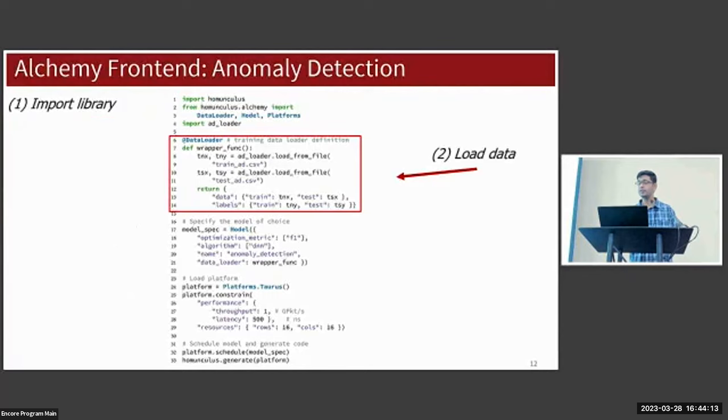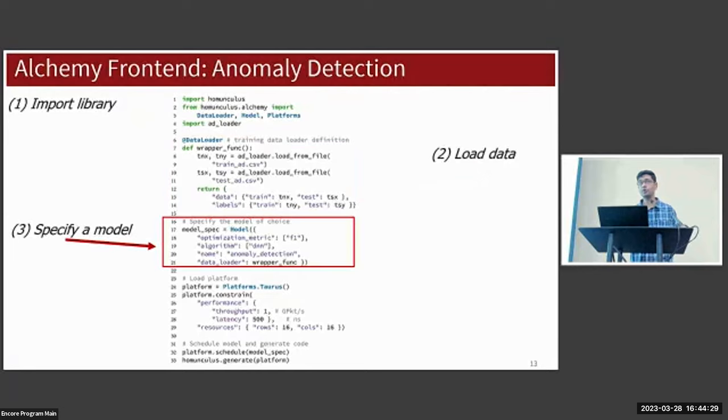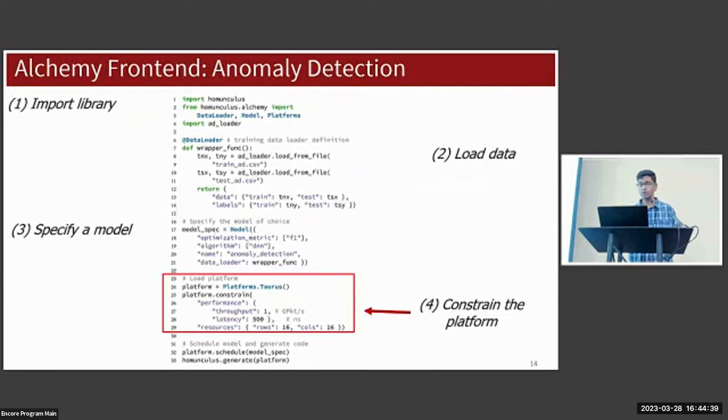First we'll import the relevant Homunculus Python libraries. Next we'll load the training and test data - here we're loading the data from CSV files and returning it as a formatted dictionary. We only need to add the data loader annotation as seen in line six for the function to be recognized by Alchemy. In step three we're going to specify the model, a deep neural network where we're optimizing for the F1 score, and we're going to provide it the data loading function that we just specified.